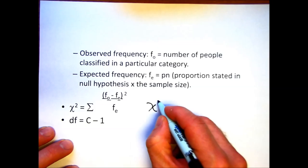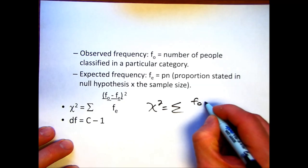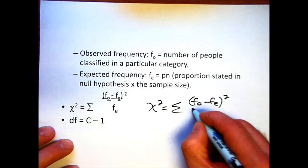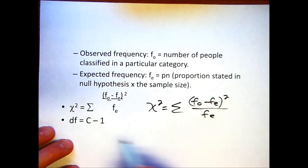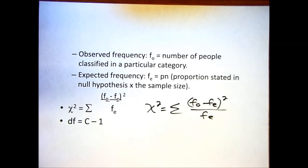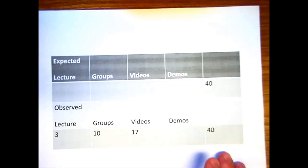And then our chi-square, that's our symbol for it, chi-square is the sum, as we see here, the frequencies, observed frequencies, minus the expected frequencies. We square that and then we divide it by the expected frequencies. We do that for each one of the cells. Degrees of freedom are simply the columns minus, number of columns that you have, minus one for that. So let's go through an example.